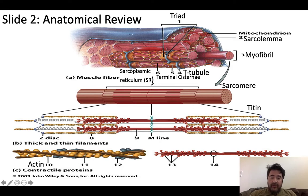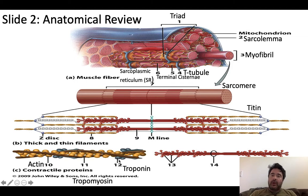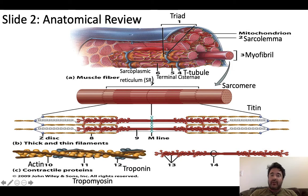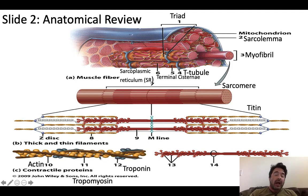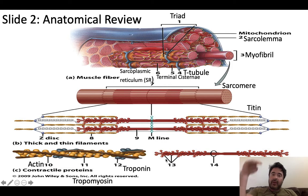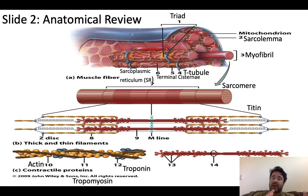Thin filaments are made of repeating units of actin. Covering that actin is troponin and tropomyosin. The job of troponin is to bind calcium. When calcium levels elevate in the cell, calcium binds to troponin and shifts tropomyosin out of the way, exposing myosin binding sites on actin. The more calcium you have, the more calcium is bound to troponin, the more tropomyosin shifts out of the way, and the more myosin binding sites on actin are exposed. The myosin heads bind to those sites during muscle contraction — we're about to go over that contraction cycle.